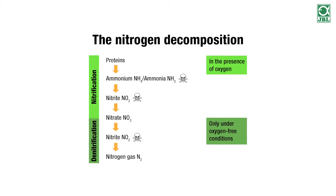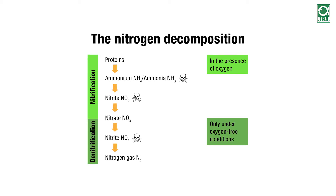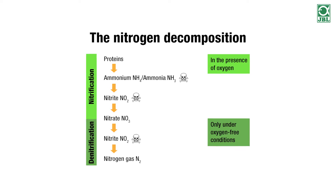And this turns into nitrite — a substance that can actually kill fish. Nitrite turns into nitrate. This is the first stage of nitrogen decomposition. Nitrate in turn can be reduced by bacteria to nitrite, if no oxygen is present.